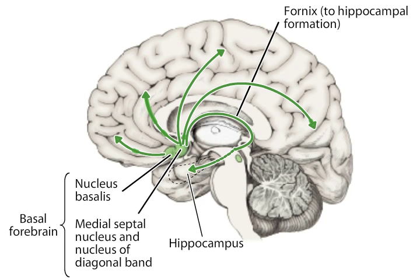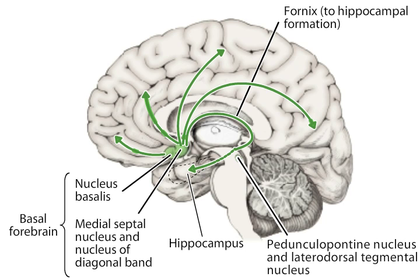A smaller group of cholinergic cells in the pedunculopontine and laterodorsal tegmental nuclei project to the reticular formation and thalamus, and are believed to be involved in arousal and the sleep-wake cycle. Cholinergic systems in the cortex are crucial for learning and memory, and widespread loss of these cells is a characteristic of Alzheimer's disease.